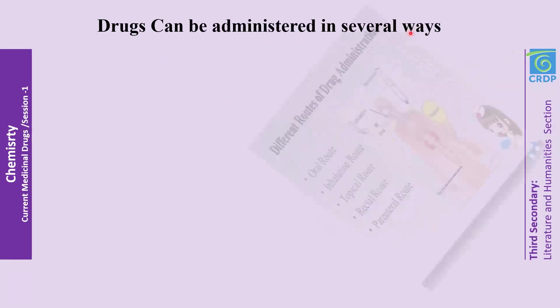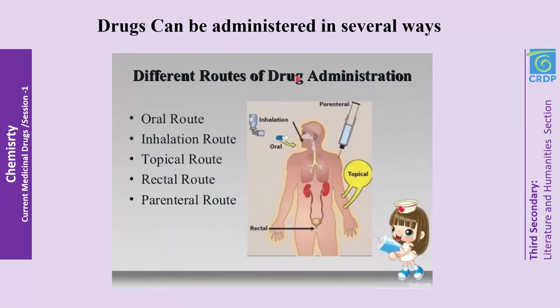Drugs can be administered in several ways: number one, through the oral route; number two, through the inhalation route; number three, through the topical route; number four, through the rectal route; and number five, through the parenteral route.